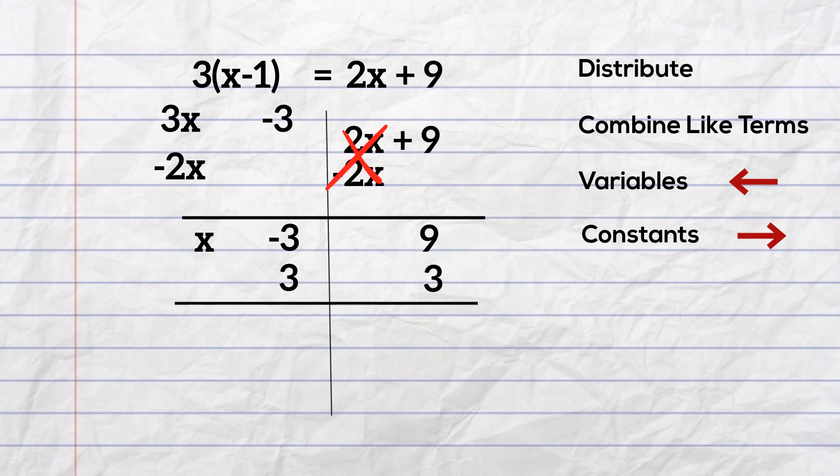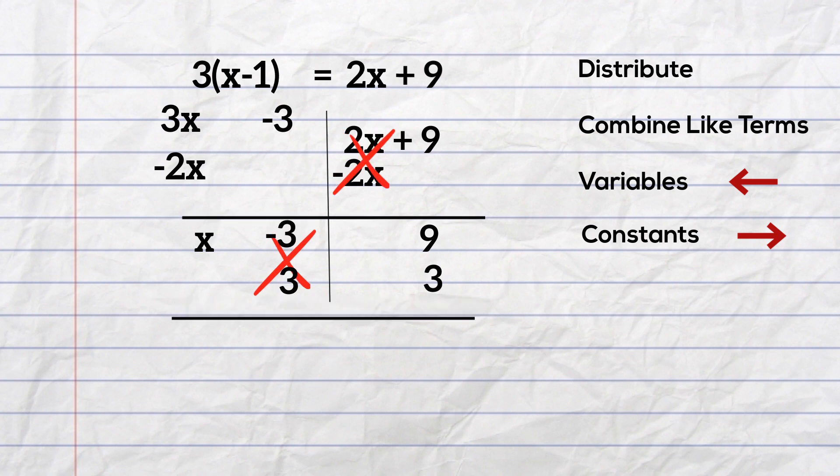So I will have x, the 3's cancel, equals, and then 9 plus 3 is equal to 12. So there's your answer.